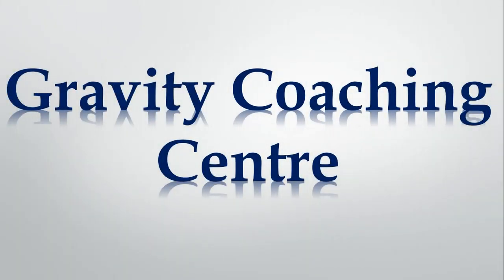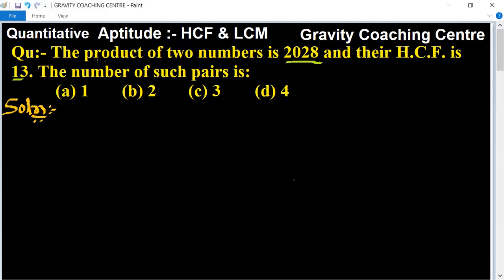Welcome to our channel Gravity Coaching Center. This HCF and LCM question asks: the product of two numbers is 2028 and their HCF is 13. The number of such pairs is: (a) 1, (b) 2, (c) 3, or (d) 4.